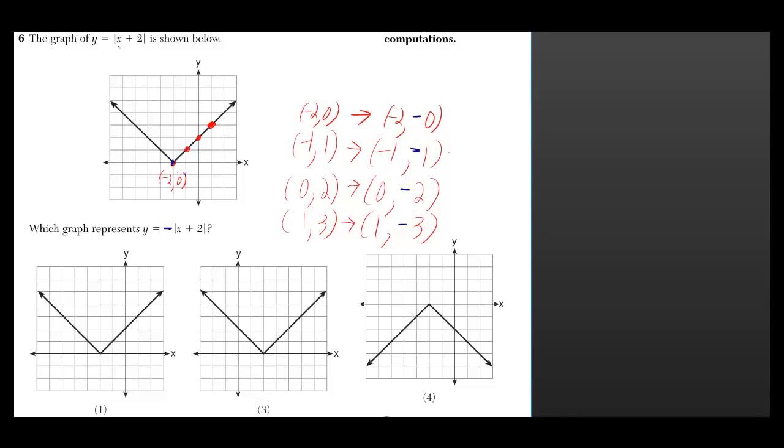The graph of y = |x + 2| is shown below, but they want to know the graph of -|x + 2|. So whatever y-coordinates we got before, now we're just going to put negative in front of them.